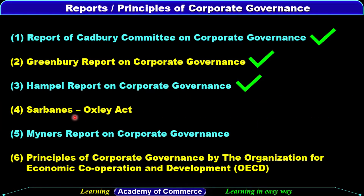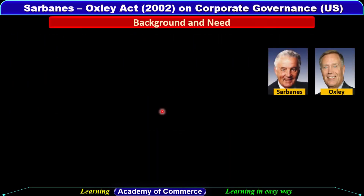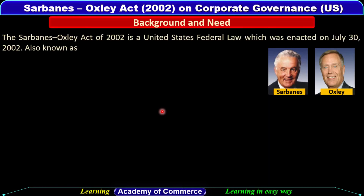In this video, we will discuss the Sarbanes-Oxley Act. Firstly, we will understand the background and need of the Sarbanes-Oxley Act. The Sarbanes-Oxley Act of 2002 is a United States Federal Law which was enacted on July 30, 2002.